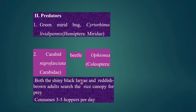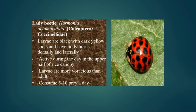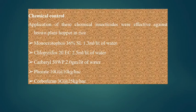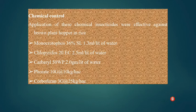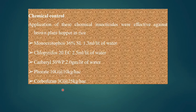Natural predators include green mirid bugs and carabid beetles — with shiny black larvae and reddish-brown adults — that search the rice canopy for BPH prey. Lady beetles also serve as predators. Chemical control options include: monocrotophos 36% SL at 1.3 ml per liter of water; chlorpyrifos 20 EC at 2.5 ml per liter of water; carbaryl 50% WP at 2 grams per liter of water; phorate 10G at 10 kg per hectare; or carbofuran 3G at 25 kg per hectare.